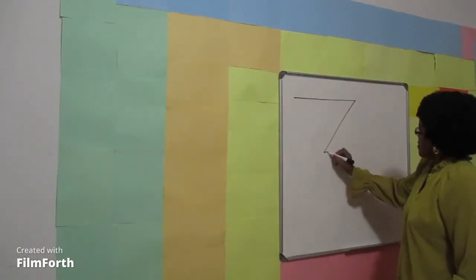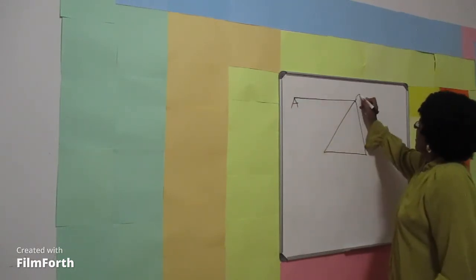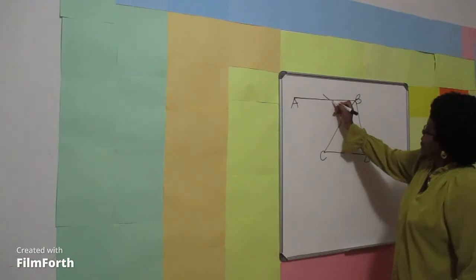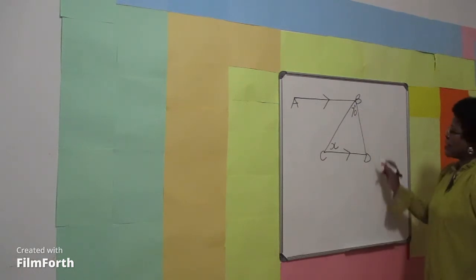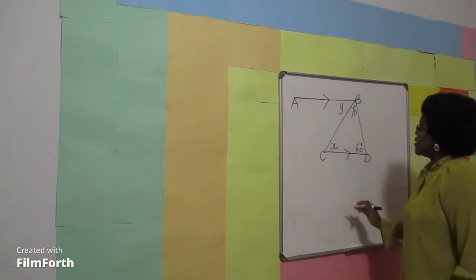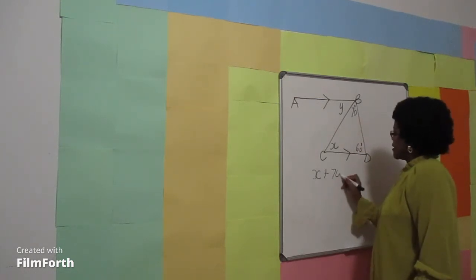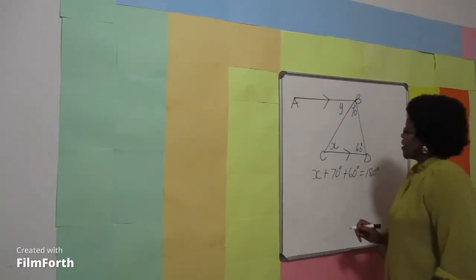Determine the value of X in the following diagram. Line AB, line CD. AB line is parallel to CD line. The value of X is unknown. One angle is 70 degrees, and another angle is 60 degrees. The sum of angles in a triangle equals 180 degrees. Therefore, X plus 70 degrees plus 60 degrees equals 180 degrees.